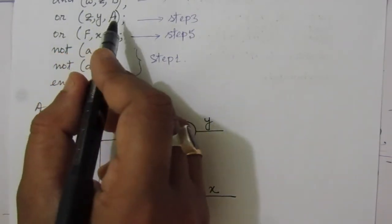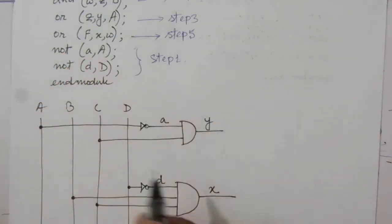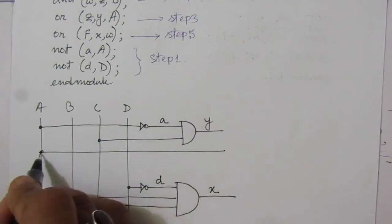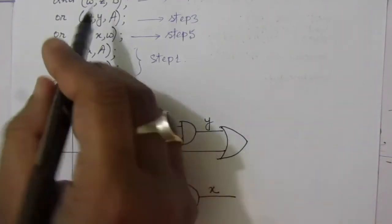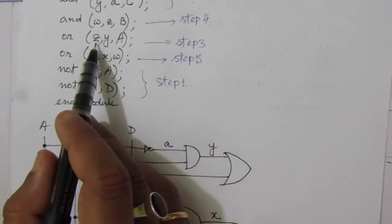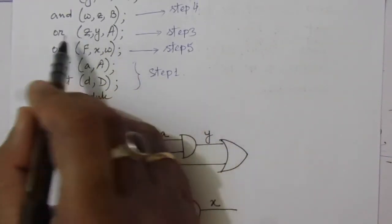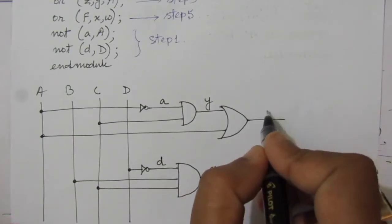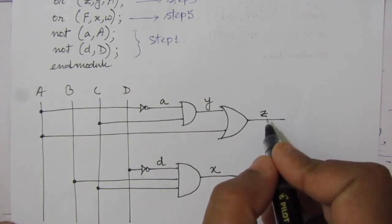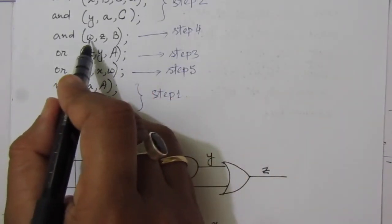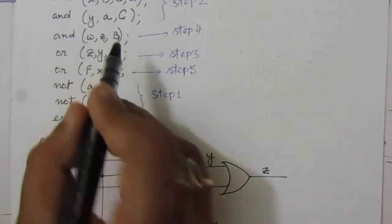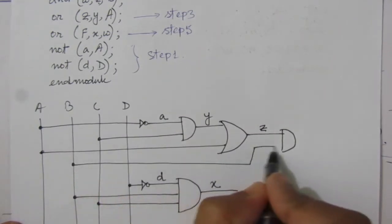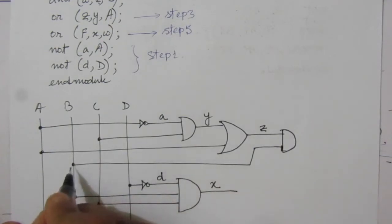In the third step we do the OR operation between small y and capital A, storing the result in z. Small y and capital A are the two inputs of an OR gate. Here we get small z, which is the OR operation between small y and capital A.